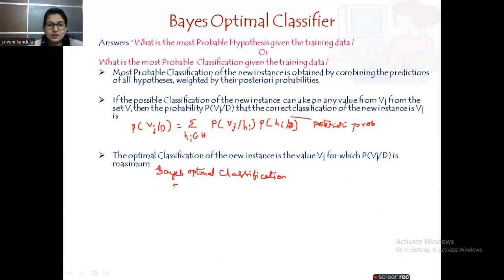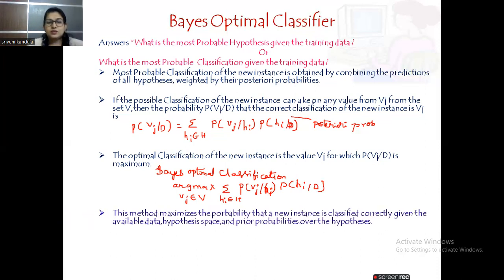The Bayes optimal classifier is written as argmax over Vj in V of the summation over Hi in the hypothesis set H of P(Vj|Hi) multiplied with P(Hi|D). This method maximizes the probability that a new instance is classified correctly, given the available data, hypothesis space, and prior probabilities over the hypotheses.